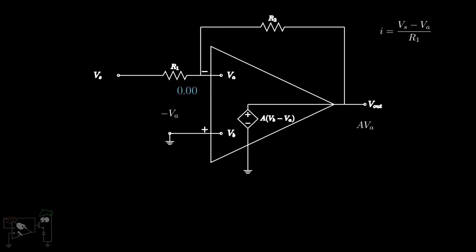The negative feedback forces the inverting input voltage to zero. Hence even though V minus was not connected to ground, it appears as if it was grounded due to the negative feedback. The negative feedback along with the high gain of the amplifier forces the input differential voltage V plus minus V minus to zero.